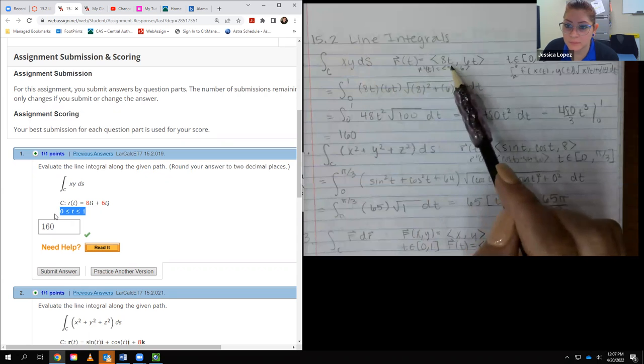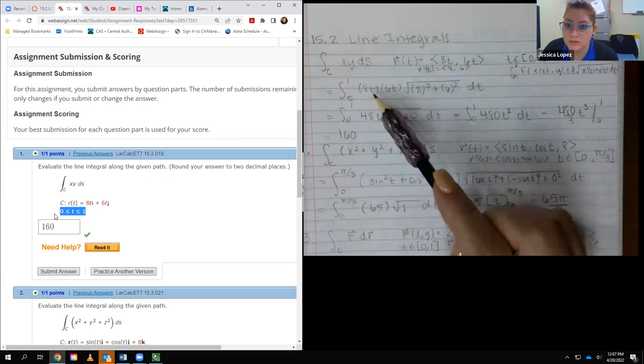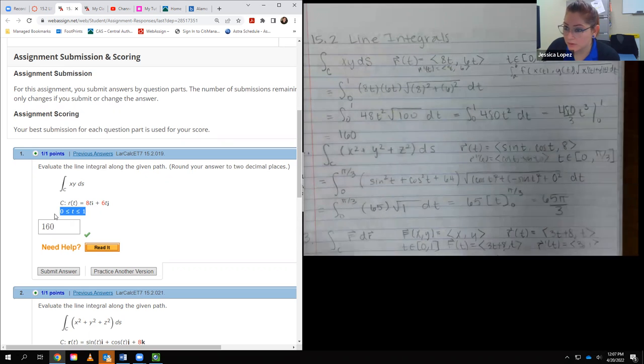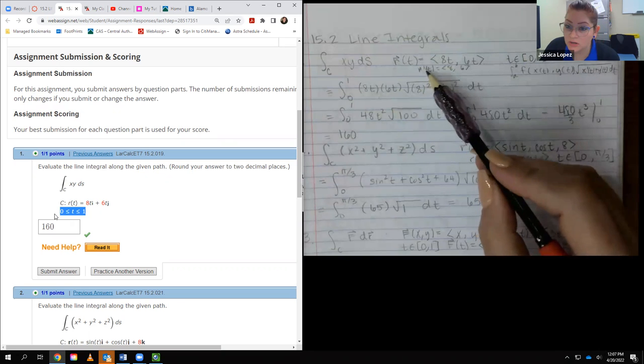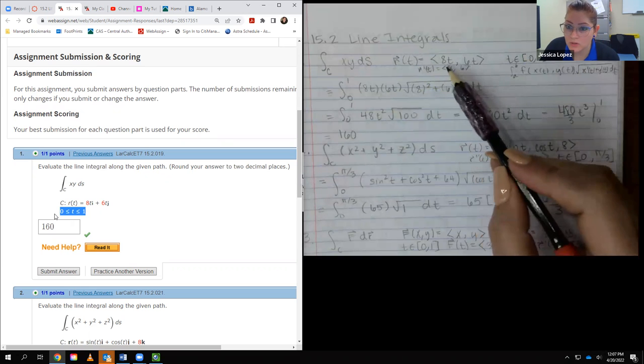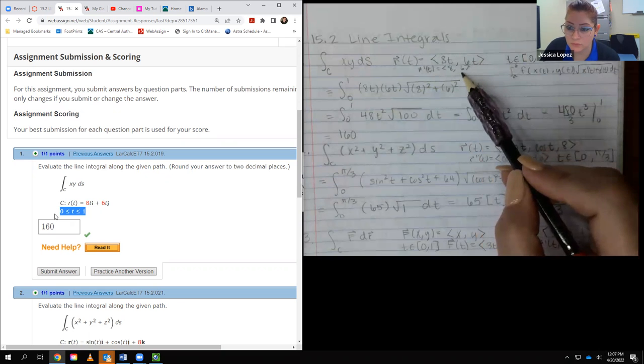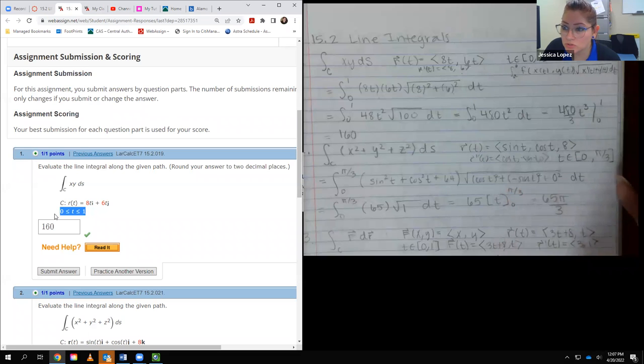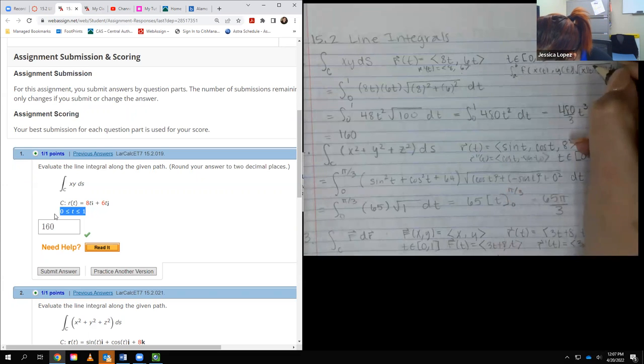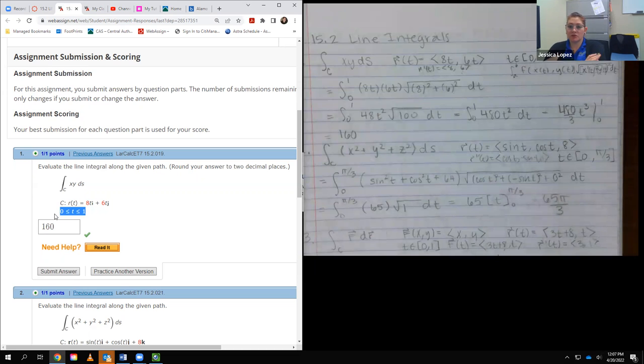I plugged in 8t for x and I plugged in 6t for y, and they're multiplied. Then you have to multiply by the derivative of x prime plus y prime, which is essentially r prime, the individual components of r prime. So I took the derivative of this, I got 8, took the derivative of this with respect to t, and I got 6. So that was my x prime and my y prime, and each one should be squared inside that radical. So I ended up with the square root of 8 squared plus 6 squared, and then your dt for your integration.